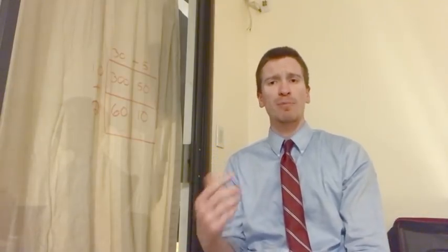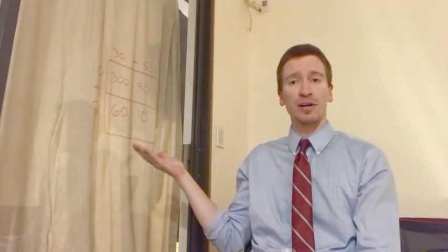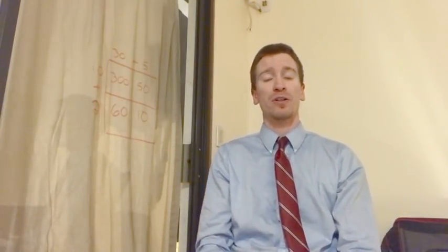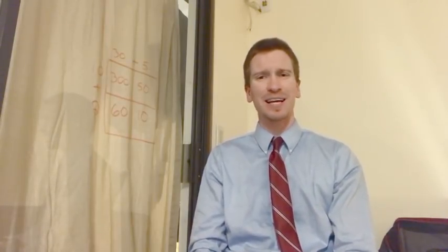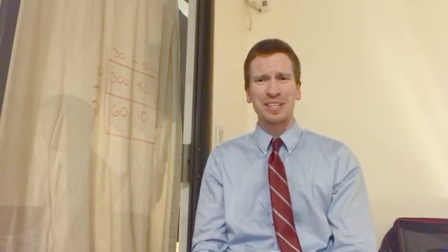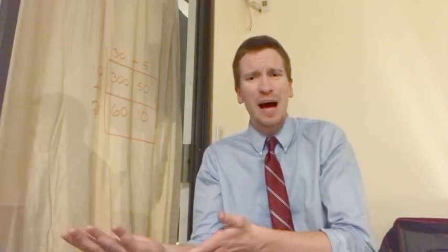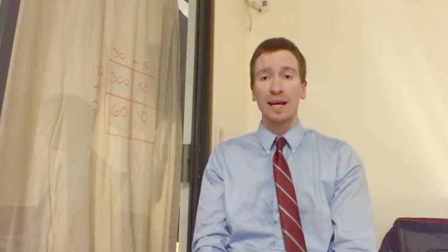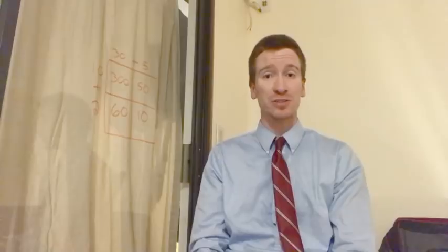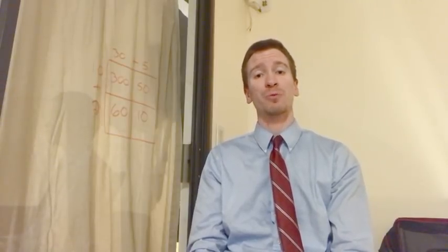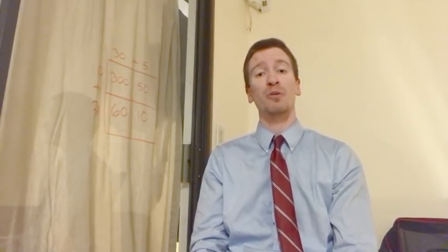She presented the problem 35 times 12 using what she called an area model, and the response was that a lot of parents seemed very upset saying, doesn't she know there's an easier way to do this problem? I just did it in five seconds. The answer is she probably does know that there's a faster way to do the problem, and there's probably a pretty good reason that she chose to present the problem the way that she did.